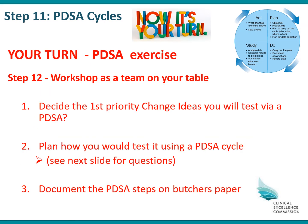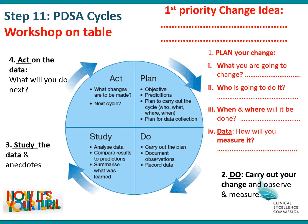Now it's your turn. In your team, decide the first priority change concept that you'll test via a PDSA. Plan how you'll test it using the PDSA cycle and document the PDSA steps on some butcher's paper. Work out what you are going to change, who's going to do it, when and where it will be done, and what measures you will use — thinking about process and balancing measures.